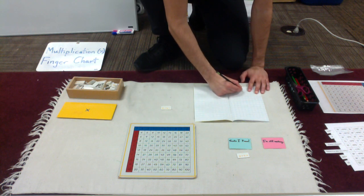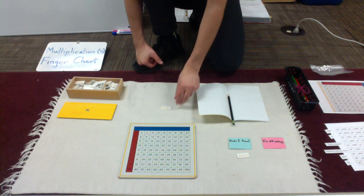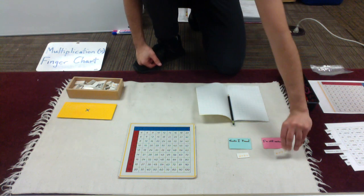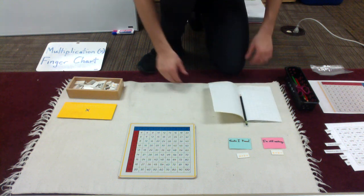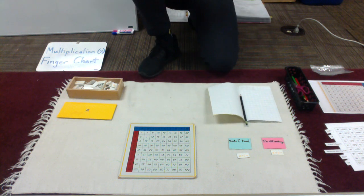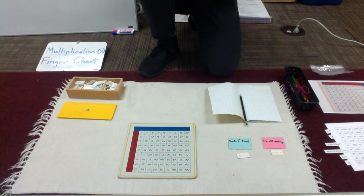And I find that 4 times 4, the product is 16. See it, say it, write it. I've recorded 4 times 4 equals 16. And that was a fact that I was still working on. So this would be the way you would practice this work at the very beginning of your memorization of your multiplication facts.